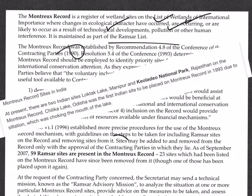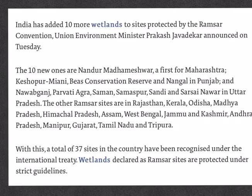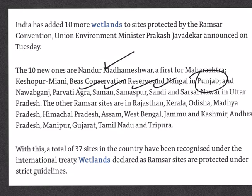At present there are two Indian sites in the Montreux Record: Loktak Lake and Keoladeo National Park. India has recently added 10 more wetlands under the Ramsar convention. The first is Nandur Madhameshwar, the first site from Maharashtra. Next, three are from Punjab: Keshopur-Miani, Beas Conservation Reserve, and Nangal. The last six are from Uttar Pradesh: Nawabganj, Parvati Agra, Saman, Samaspur, Sandi, and Sarsai Nawar. With this addition, there are now 37 Ramsar sites in India.